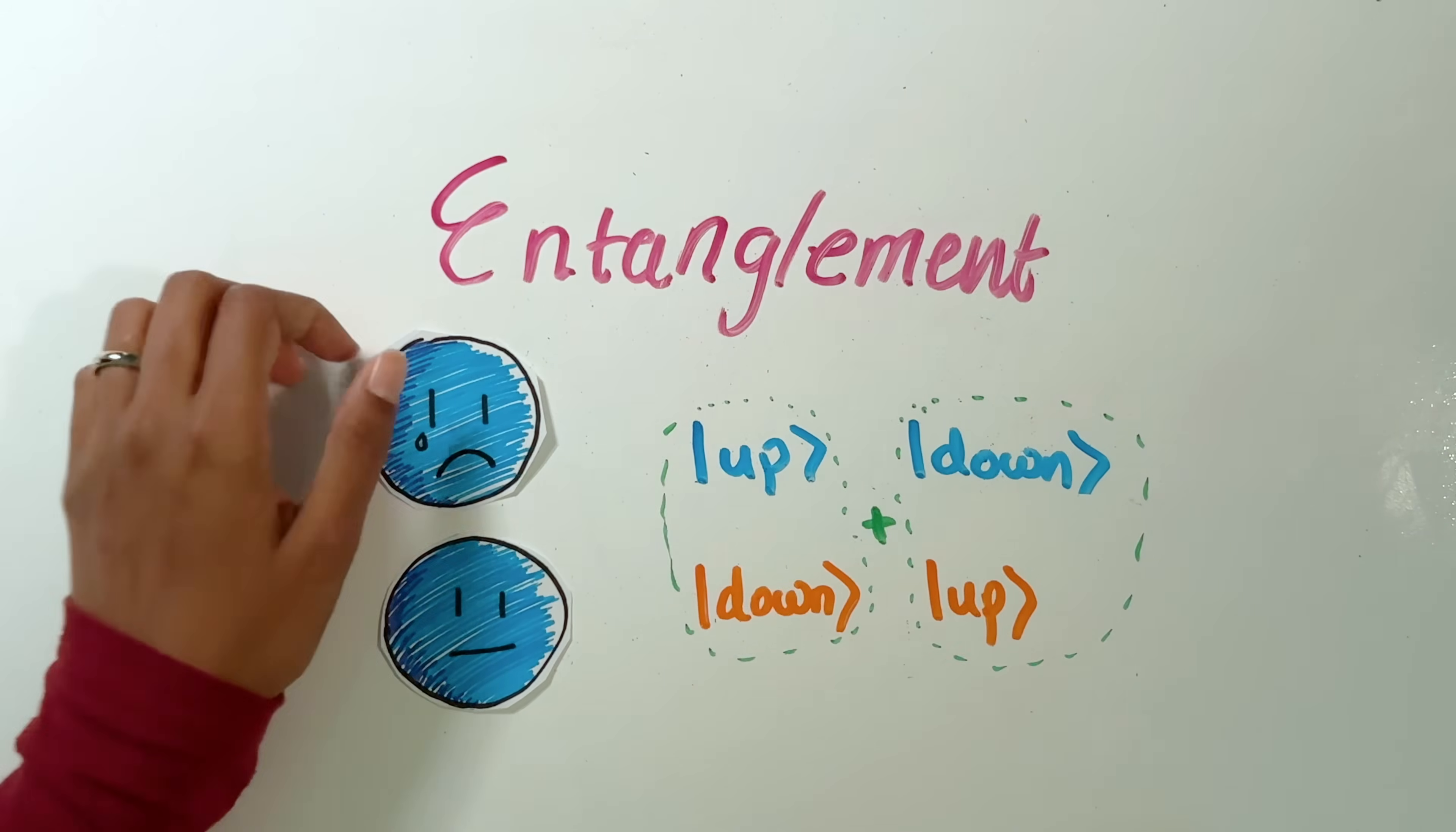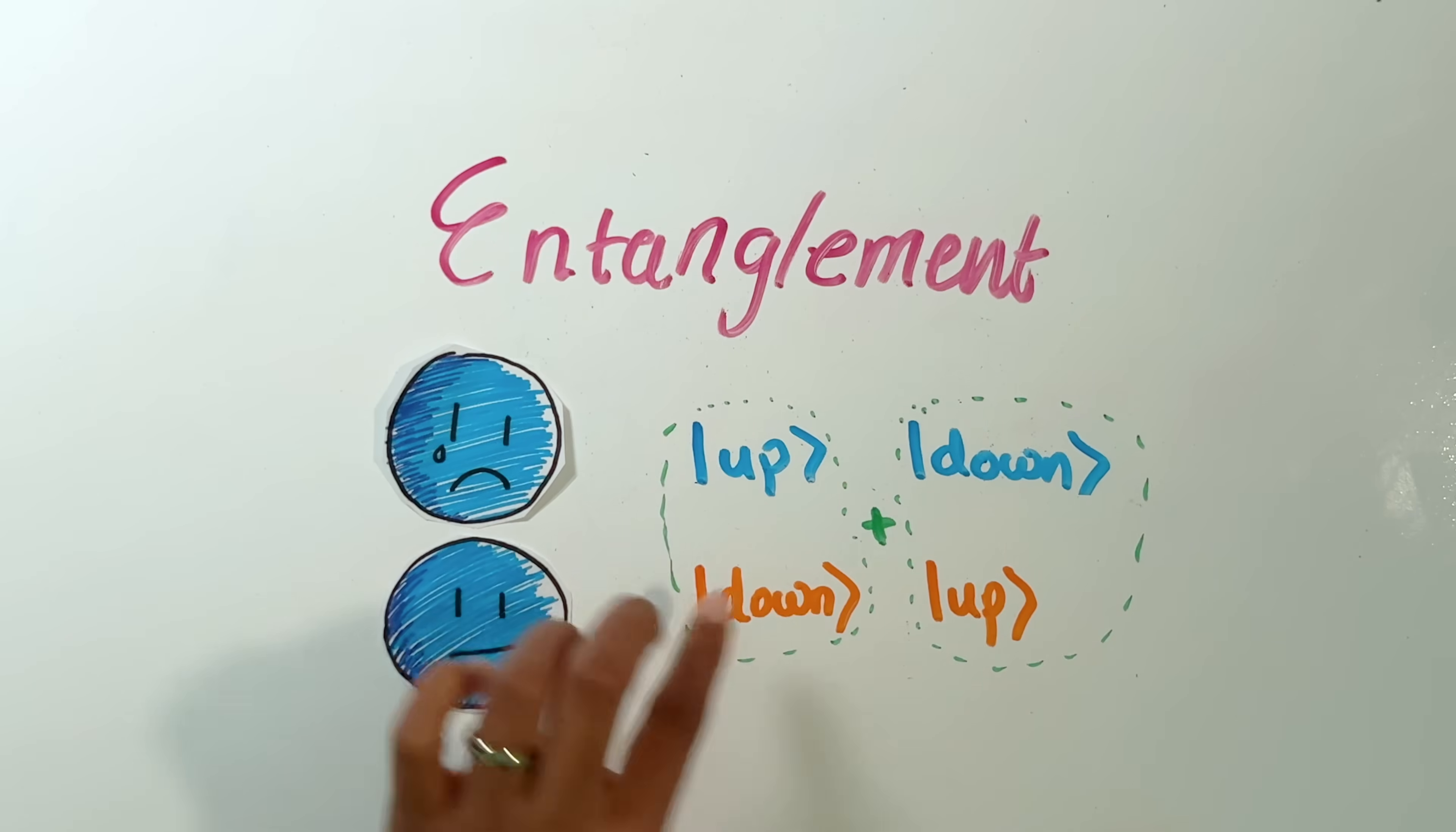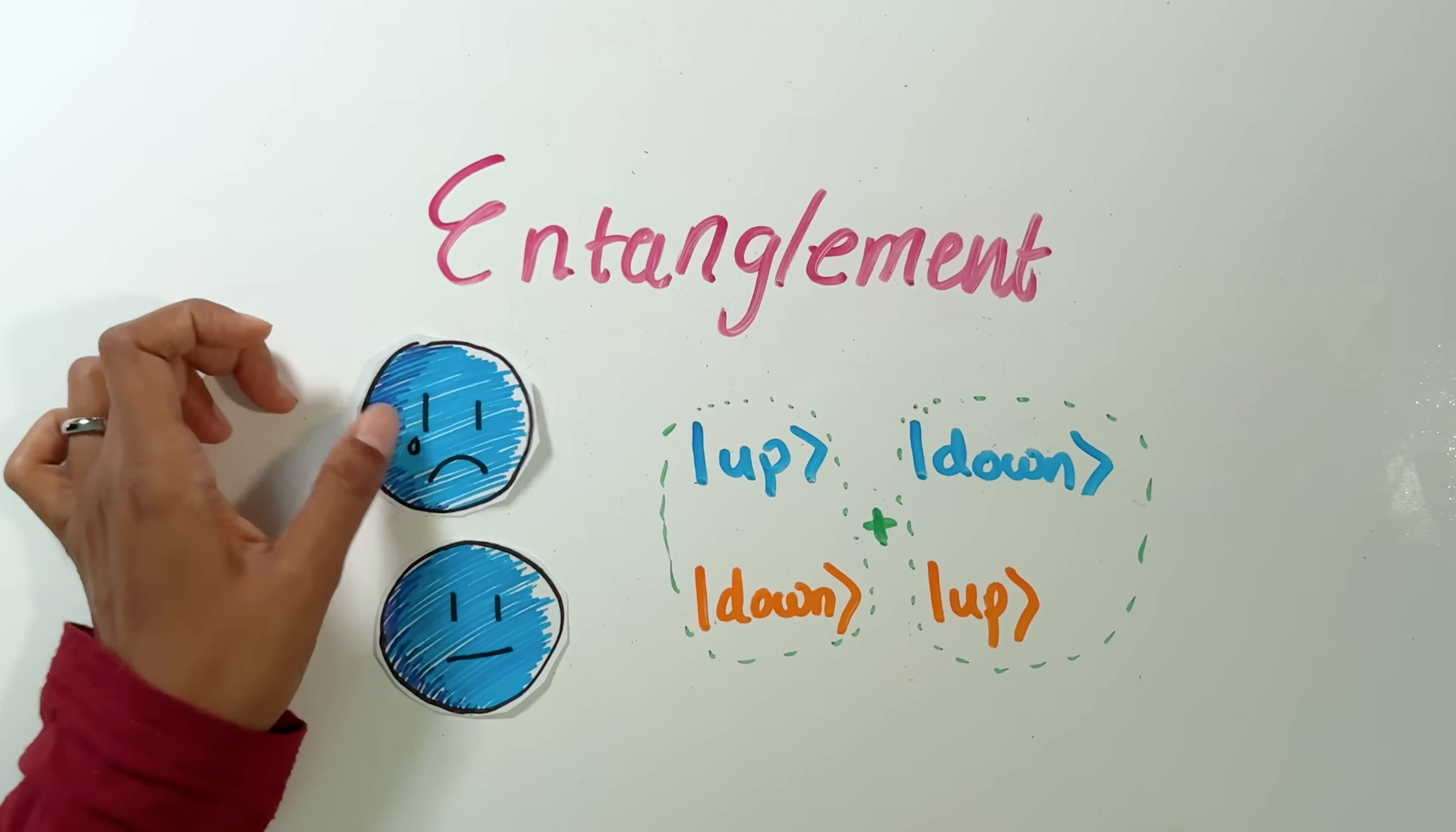What happens with the measurements? Well, let's suppose that our friend measures this electron. This electron has two options. It can be up when the other one is down, or it can be down when the other one is up. Both of these options have a 50% chance of happening, because it's an equal superposition of these two options. So let's say our friend does the measurement and they find that this electron is up.